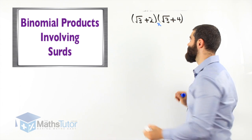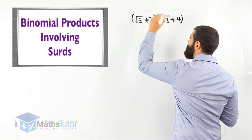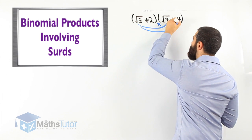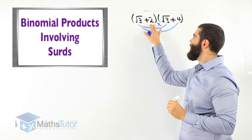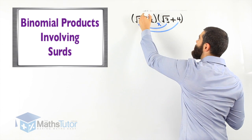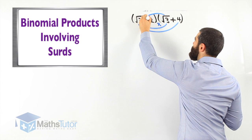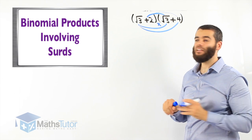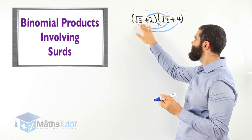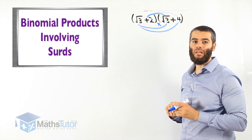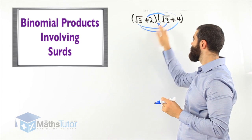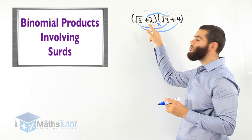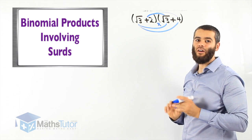Let's see how we do these ones. Root 3 times root 3, root 3 times 4, and 2 times root 3, and 2 times 4. So what we are saying is that every term is multiplied by the other term on the other side. Now let's complete it.